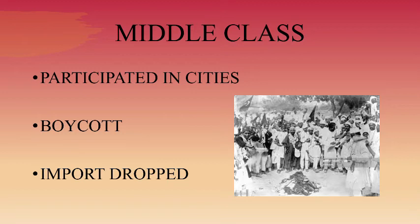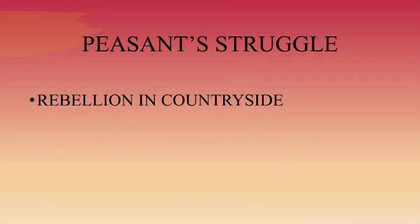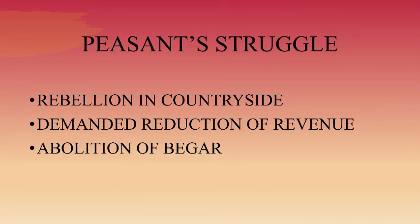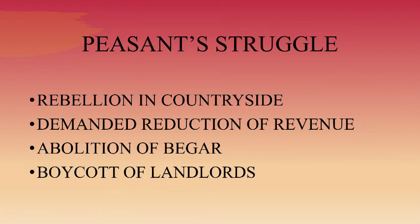The second group was peasants, who revolted in the countryside. They were led by Baba Ramchandra, and the movement was against talukdars and landlords. Peasants demanded reduction of revenue, abolition of begar, and social boycott of oppressive landlords. As the movement spread, houses of talukdars and merchants were attacked and bazaars were looted.